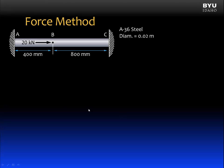Let me provide a little more information for the structure we were looking at previously. Let's say we have dimensions of 400 millimeters from A to B and 800 millimeters from B to C. We also know the structural material. It is A36 steel, and the member has a diameter of 0.02 meters.